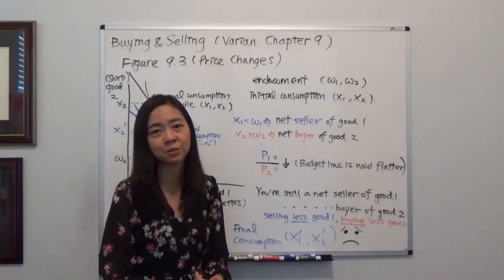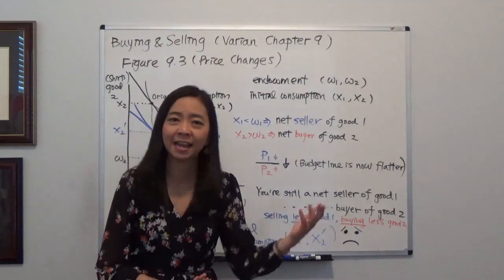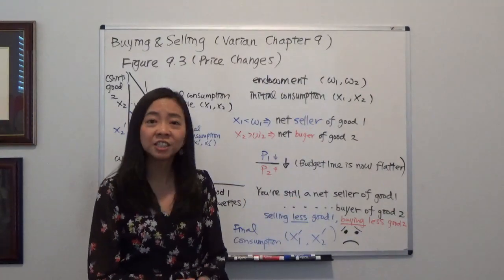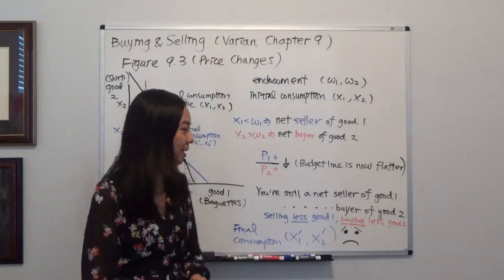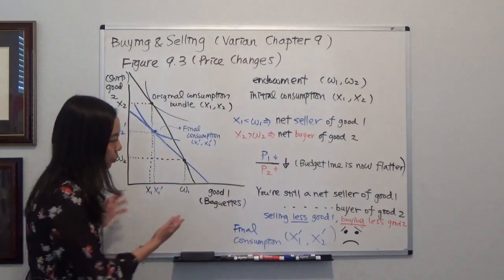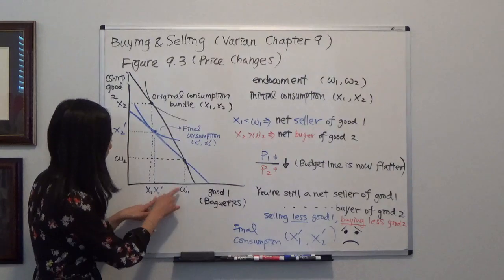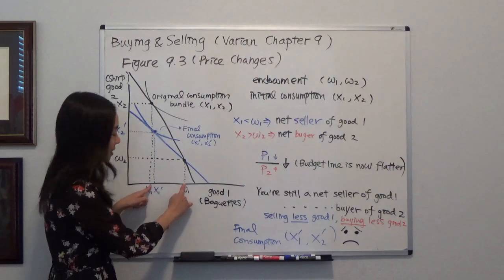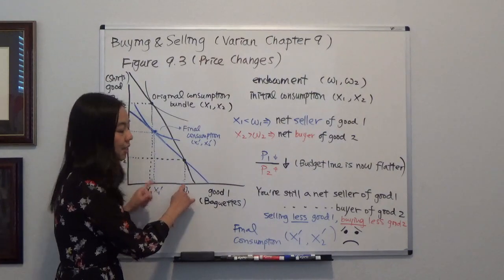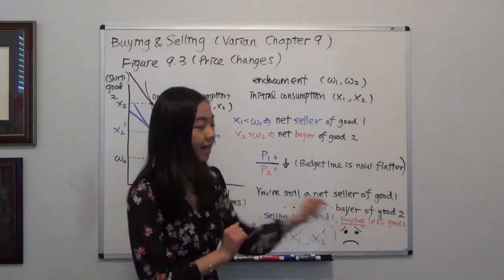But you're very unhappy because when you're selling baguettes, the price of baguette is lower, and when you're buying t-shirt, the price of t-shirt is now higher. So you end up selling less of good one. You see that you're not selling that much anymore. You're selling only this much. And you're also buying less of good two.